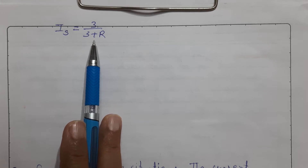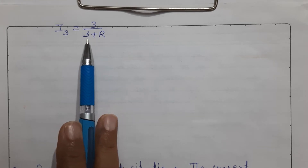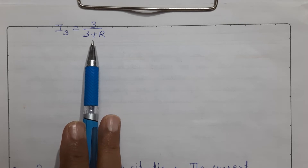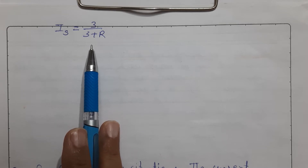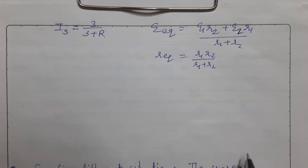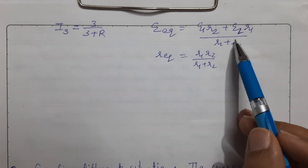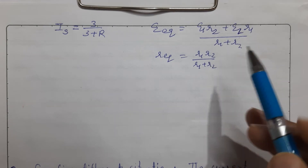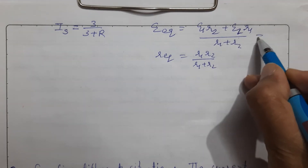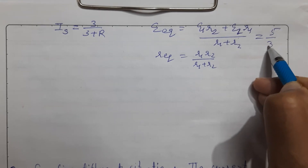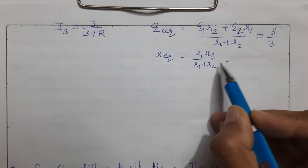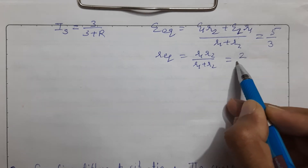For the parallel case, we use the equivalent EMF and equivalent internal resistance formulas. Substituting the values, the equivalent EMF comes out to be 5/3 V and the equivalent internal resistance comes out to be 2/3 ohm.